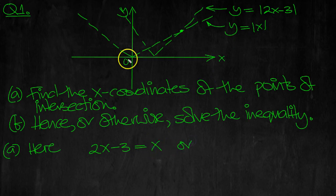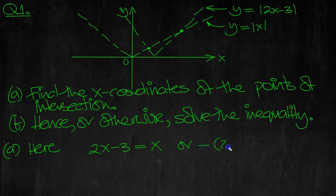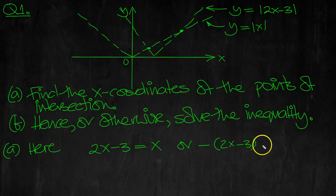The other intersection is here, and that would be when we have the negative of the modulus — minus (2x minus 3) — because it's that side of the modulus, equal to the positive side of the modulus here.